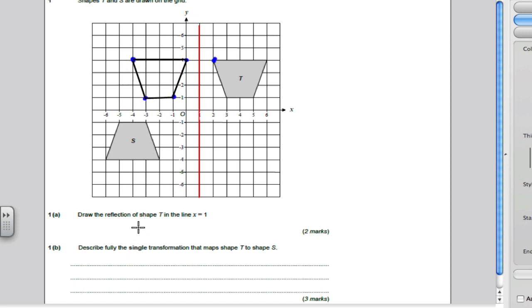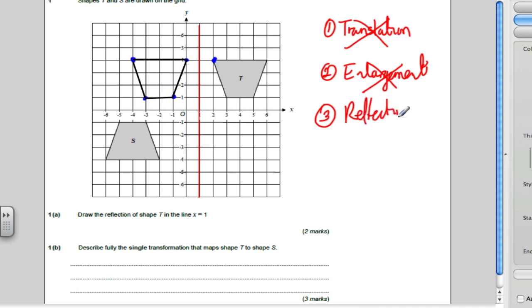Then it says, describe fully the single transformation that maps T onto S. What are the transformations available to us? It could be a translation. But it isn't because the shape's been flipped in some way. Is it an enlargement? No, the shape hasn't got bigger or smaller. Could it be a reflection of some kind? It doesn't look like I can think of a mirror line. So it must be a rotation.